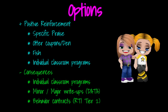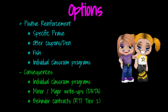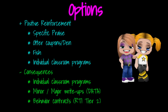Also think about consequences. The kids are free to make their choices, but they are not free from the consequences that follow. Remember to write up majors or minors — the data is much needed. That way we can help struggling students. And also remember behavior contracts.